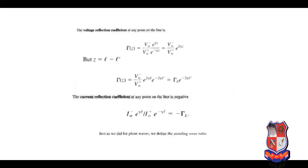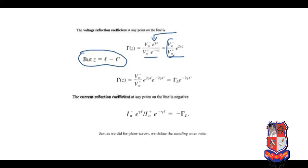Now, if we are supposed to evaluate this reflection coefficient at a different point on the transmission line, then in place of the general length L we have to write Z, as depicted in the power of E. So the reflection coefficient becomes V0 minus into E raised to gamma Z, upon V0 plus into E raised to minus gamma Z. This can be further simplified as the ratio V0 minus divided by V0 plus, into E raised to 2 gamma Z. Any point from the load on the transmission line is defined by the general length parameter Z.